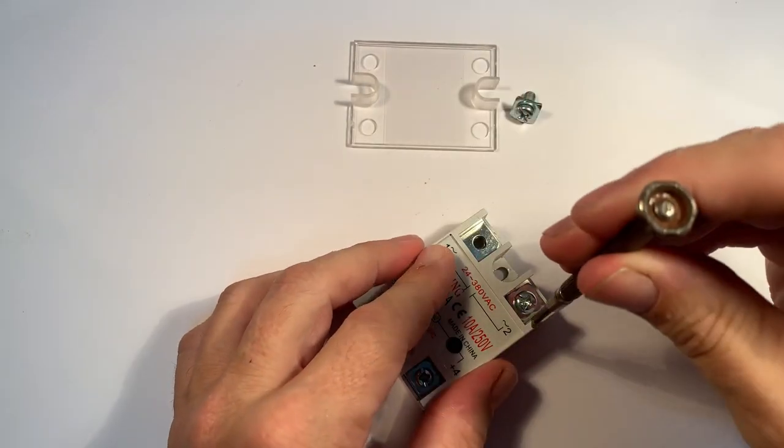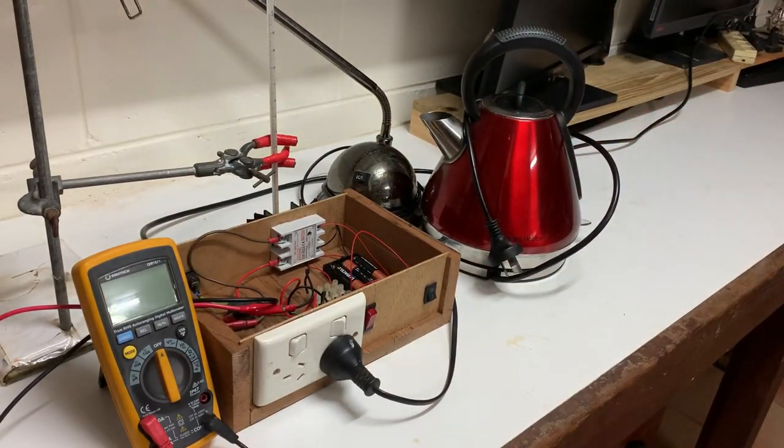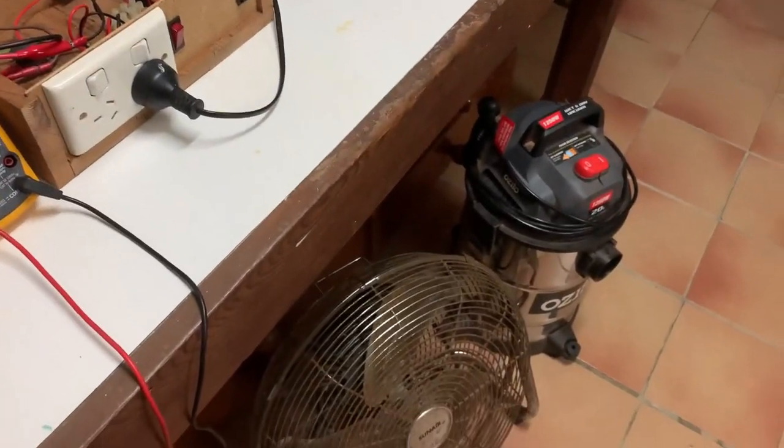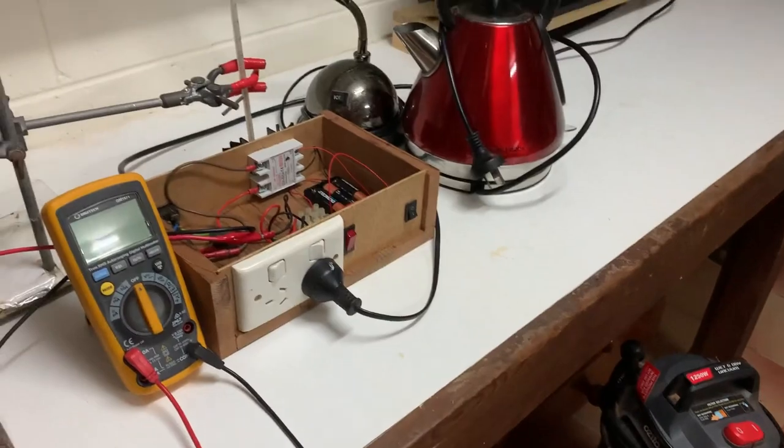The review starts with disassembly of the SSRs, then testing of a number of 240 volt AC electrical appliances that can be plugged into the solid-state relay, to give a real-world assessment of the ability of the SSR to handle a range of currents up to 10 amp.